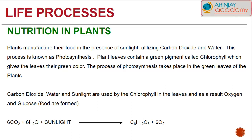When carbon dioxide, water, and sunlight are used by the chlorophyll in the leaves, oxygen and glucose are formed. Have a look at the equation below: carbon dioxide mixed with water in the presence of sunlight will end up releasing glucose and oxygen.